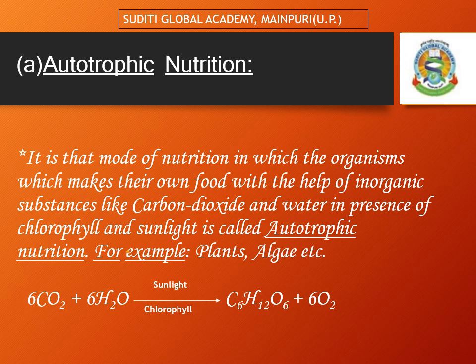Auto means self — those organisms which make their own food by using inorganic substances in the presence of chlorophyll and water and sunlight. Then food is prepared, that is glucose, and there is evolution of oxygen.